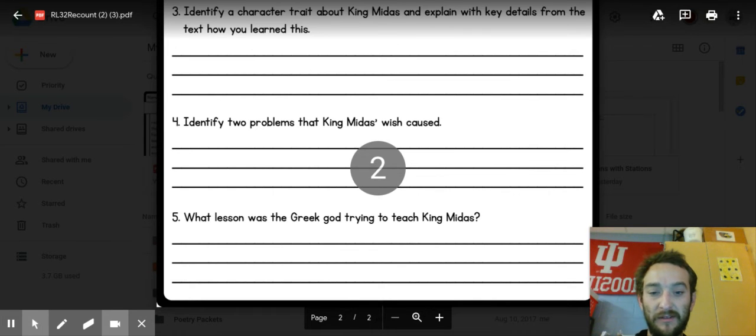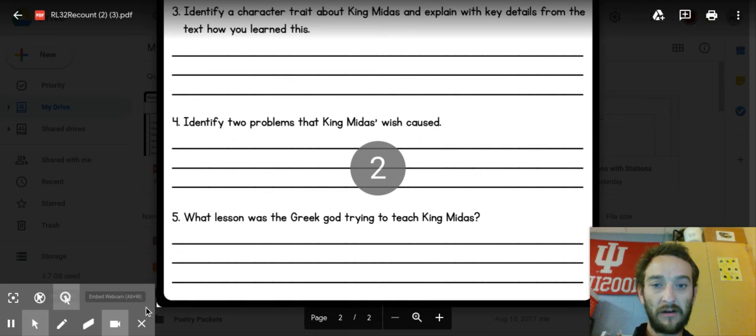And then number five, what lesson was the Greek god trying to teach King Midas? So you make sure you restate. The Greek god was trying to teach blank. All right, so those are ways that you can restate the question here.